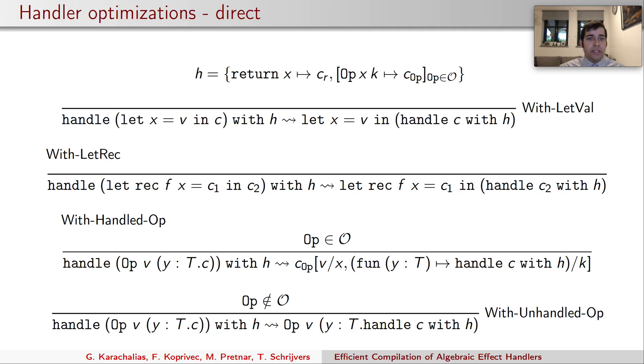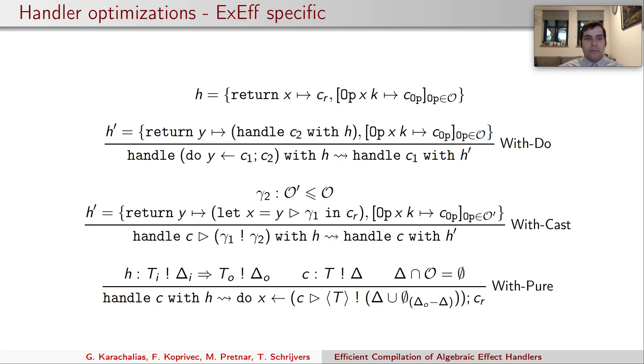Handler rules deal with handlers. The bottom two optimize handler application and use effect information to either apply the handler if needed or forward the information upward. They mainly stem from the evaluation rules.